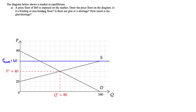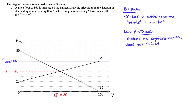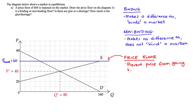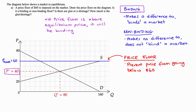We then have to decide whether this price floor is binding or not. A binding price floor is one that makes a difference to the market — it binds it to an outcome it would not otherwise reach. A non-binding price floor makes no difference to the market outcome, and the market will just revert to equilibrium. A price floor prevents the price from going below some level, so our floor prevents the price from going below 60. Price floors above the equilibrium price are binding. At the price of 60, looking at the demand curve, the quantity demanded is 40.